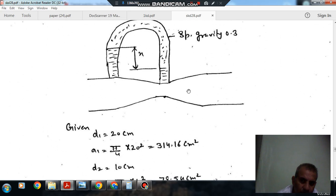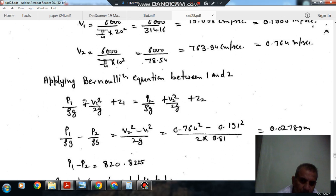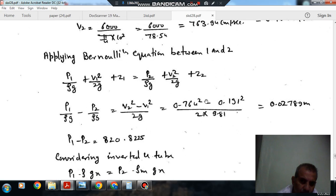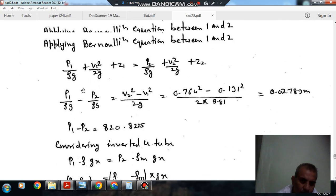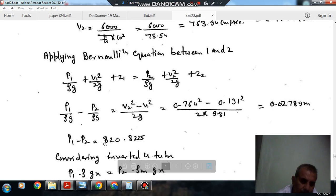Applying Bernoulli's equation between 1 and 2: P1 by rho g plus V1 square by 2g plus Z1 equals P2 by rho g plus V2 square by 2g plus Z2. So P1 by rho g minus P2 by rho g equals V2 square minus V1 square by 2g. Putting these values, P1 minus P2 by rho g is 0.02789 meter. As rho is 800 and g is 9.81, P1 minus P2 comes out as 218.825 newton per meter square.